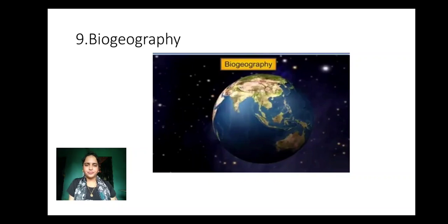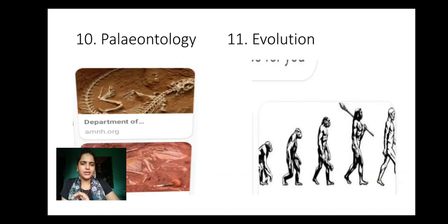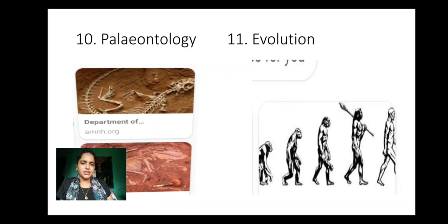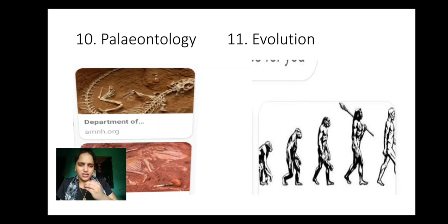Next we have biogeography. Biogeography is the branch of biology which deals with the study of living organisms in respect to their geographical distribution. Next we have paleontology. Paleontology is the branch of biology which deals with the study of prehistoric life — organisms which were once living and are now extinct. This study is done with the help of fossils. Evolution is the branch of biology which deals with how life originated on earth and how simple living organisms changed into more complex or developed forms.